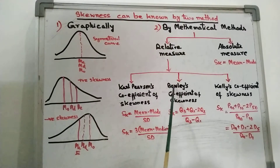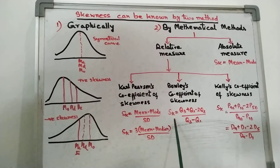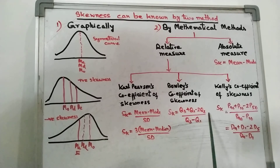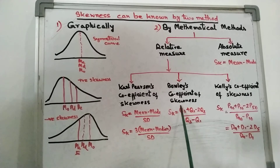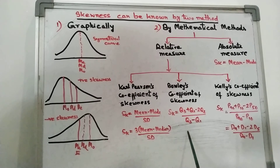The second formula is Bowley's coefficient of skewness, which is based on quartiles. The formula is: Sk = (Q3 + Q1 − 2Q2) / (Q3 − Q1). You need to find the first, second, and third quartile values, then use this formula to get the skewness value.